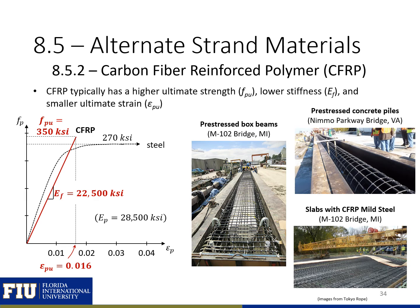Starting with carbon fiber reinforced polymer (CFRP): the stress-strain curve for CFRP compared to conventional pre-stressing strands shows a lower stiffness — from 28,500 KSI for conventional pre-stressing steel down to 22,500 KSI for CFRP strands. CFRP also has decreased ductility and is linear elastic up until failure. The ultimate strength is slightly higher at 350 KSI compared to 270 KSI for conventional pre-stressing steel, but there is no plastic yield plateau.